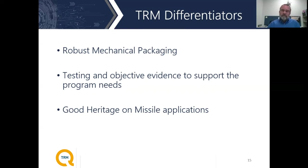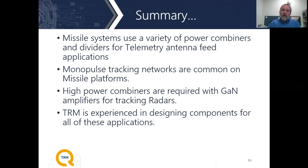Excellent. As always, Sean, lots of good information. Maybe you'd like to summarize? There's a wide variety of components used on missile systems — a variety of power combiners and power dividers for telemetry antenna feeds, as well as 0-180 hybrids. Monopulse tracking and those hybrid networks are fairly common for building a beamformer for the tracking radar on the missile itself. High-power combiners with the advent of GaN amplifiers are needed to generate a high-power source for those tracking radars. For each example listed, TRM has missile heritage.